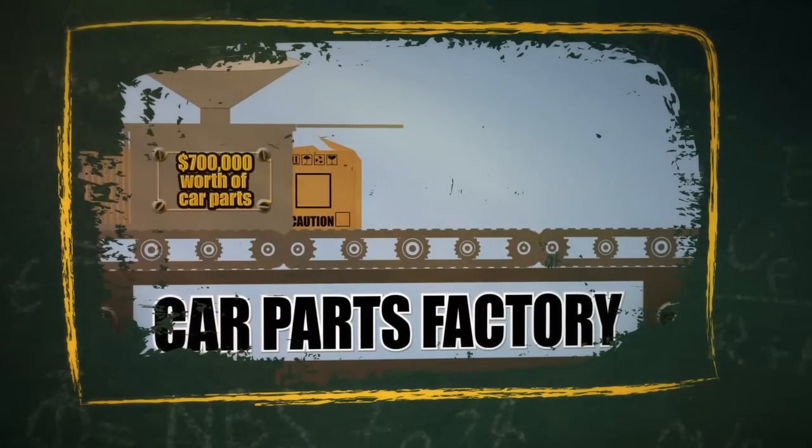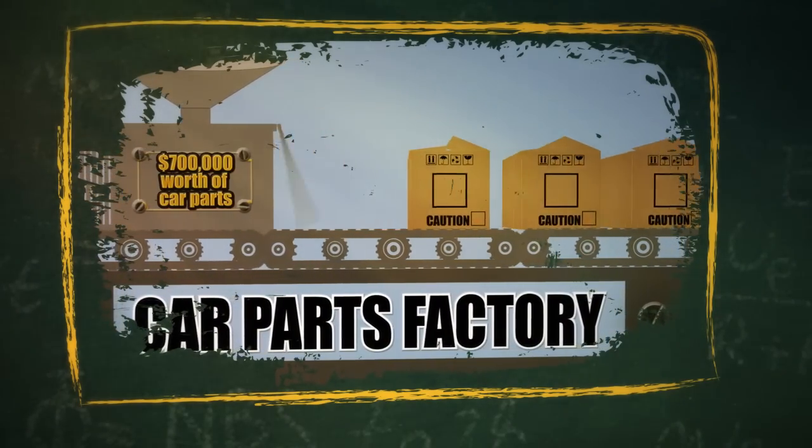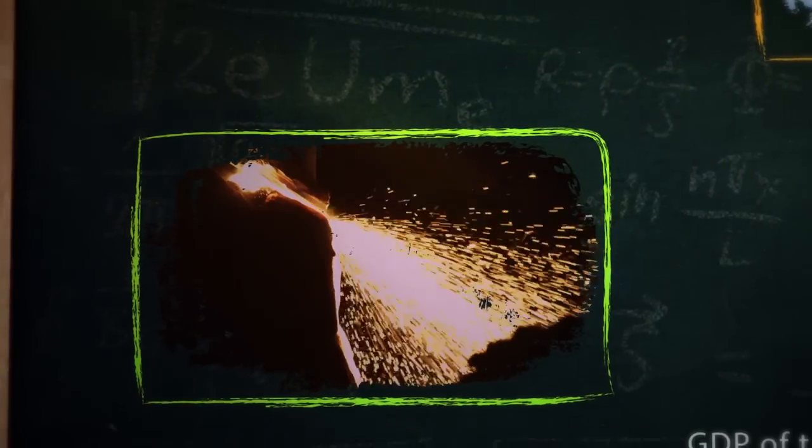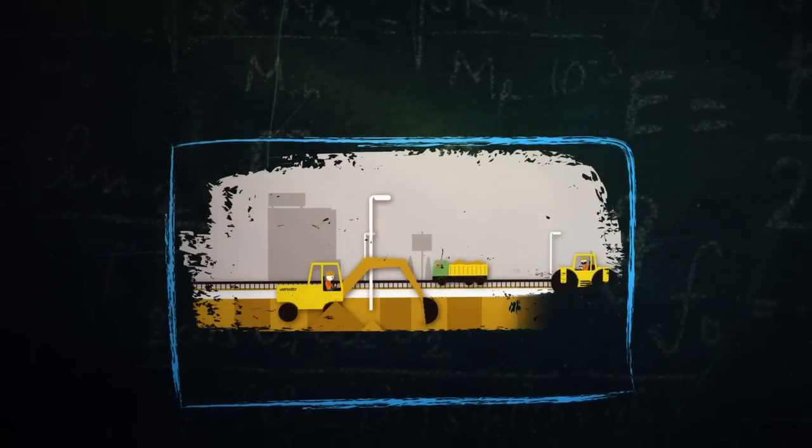But the story doesn't end there. Let's look at the motor vehicle parts manufacturer that produced the parts for the assembly plant. In order to produce the parts, it first had to purchase steel from the steel mill. Before that, the steel mill had to purchase the iron ore from a mine, and so on.